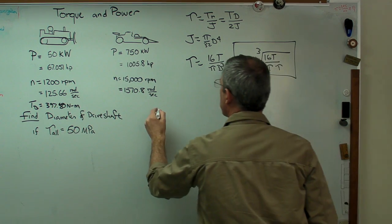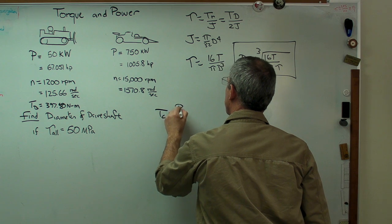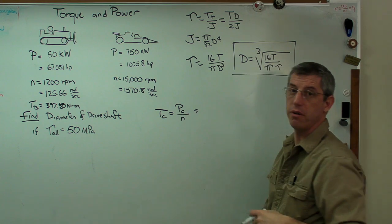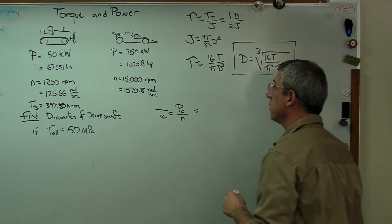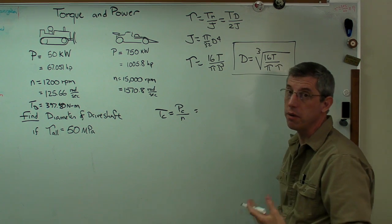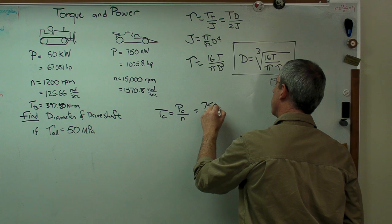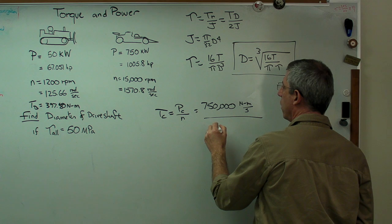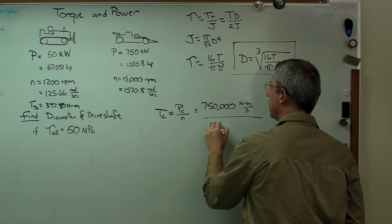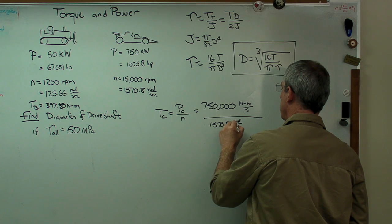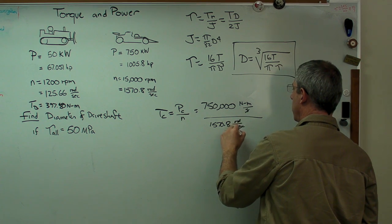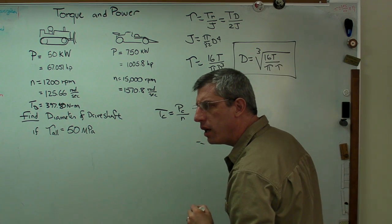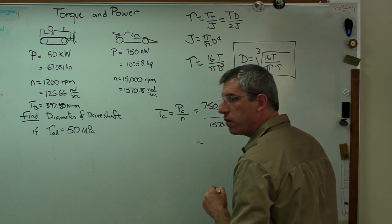Let's figure out the answer now for the race car. Same expression. We've got 750,000 watts in newton meters per second over 1570.8 radians per second. Seconds cancel out and I'm left with newton meters, so the units work. What I get here is 477.46 newton meters.